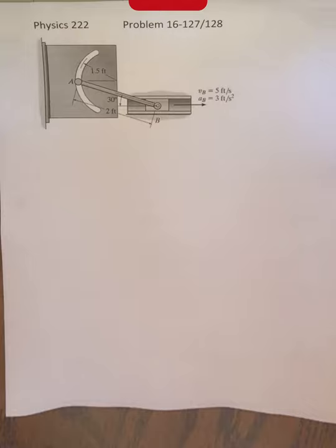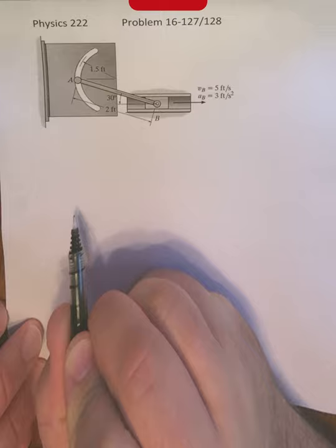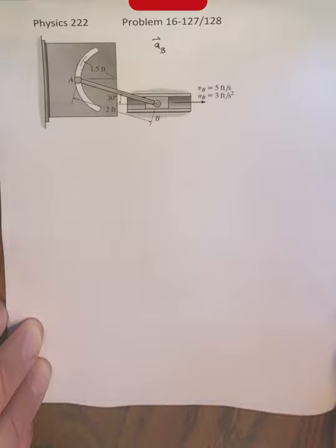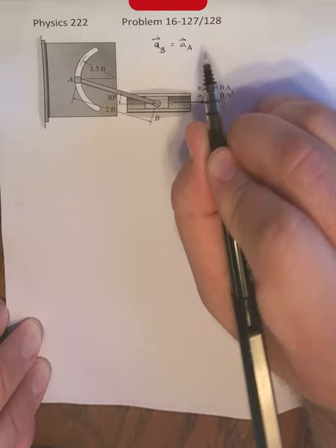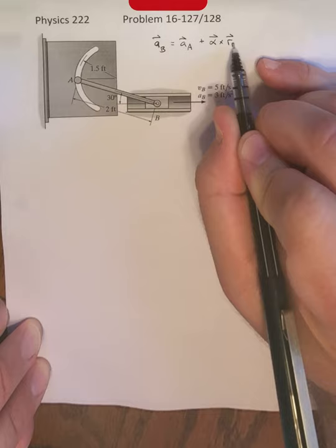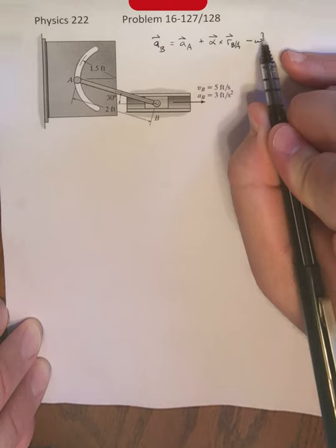The acceleration equation that we're using for this section is that we are looking at the acceleration of some point B, and that's going to be equal to the acceleration of point A plus some angular acceleration alpha crossed with rB/A minus omega squared rB/A.